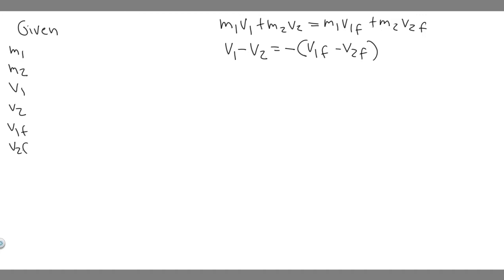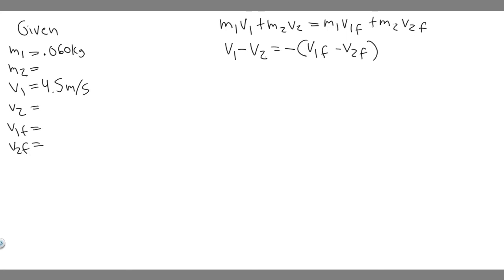Writing down each variable just makes it easier to solve. M1 is the 0.060 kilogram tennis ball, so M1 equals 0.060 kilograms. The velocity of the first ball is 4.5 meters per second, so V1 equals 4.5 m/s. The second ball has a mass of 0.090 kilograms and is moving in the same direction at 3 meters per second. Since they're moving in the same direction, both velocities are positive.